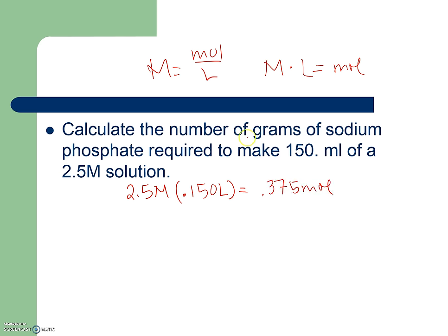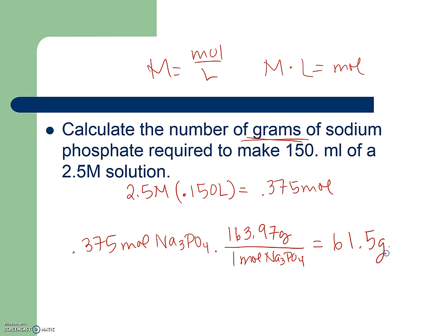That's not what my question asks. It asks for the number of grams. So I'm going to take 0.375 moles. And I need to know how to write the formula for sodium phosphate. So here, this formula writing is back as something that we need to know how to do. So it's Na3PO4. And I'm going to convert that. I'm putting 1 mole of Na3PO4 on the bottom. And I figured out my gram formula weight to be 163.97 grams. So I go ahead and multiply that. And I get 61.5 grams as my answer.